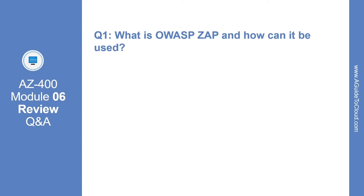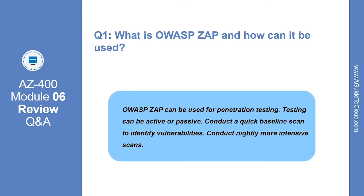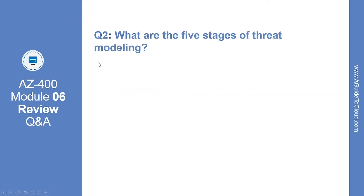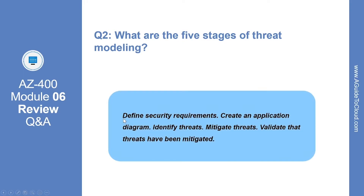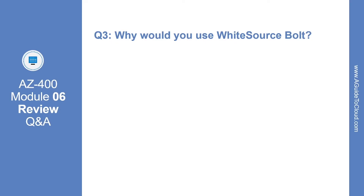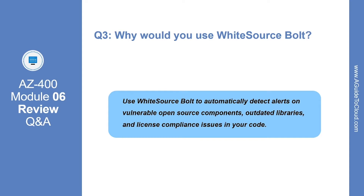In this section we are going to go through Module 6 review questions. Question 1: what is OWASP ZAP and how can it be used? OWASP ZAP can be used for penetration testing — testing can be active or passive. You can conduct a quick baseline scan to identify vulnerabilities, and you can conduct nightly more intensive scans as well. Question 2: what are the 5 stages of threat modeling? Define security requirements, create an application diagram, identify threats, mitigate threats, and validate that threats have been mitigated. Question 3: why would you use WhiteSource Bolt? You can use WhiteSource Bolt to automatically detect alerts on vulnerable open source components, outdated libraries, and license compliance issues in your code.